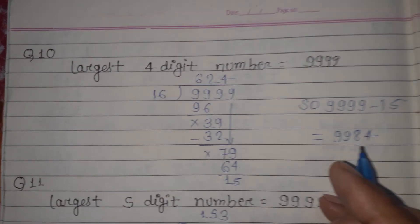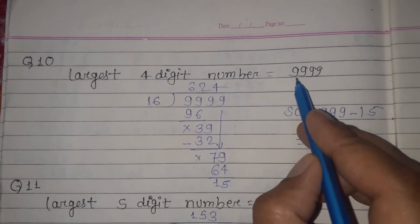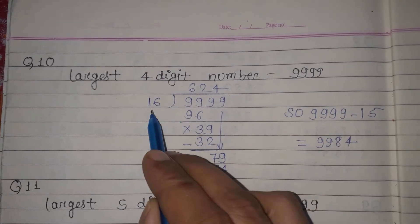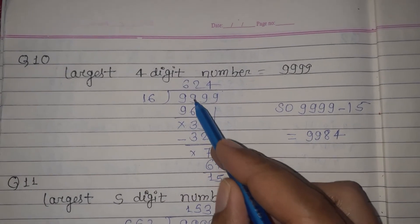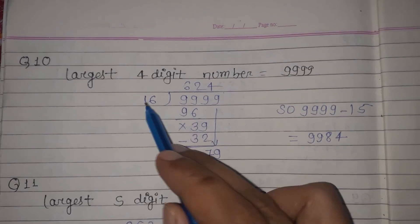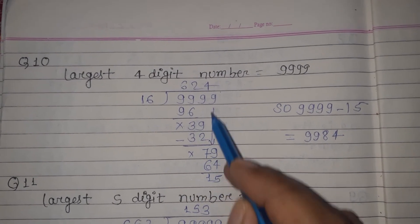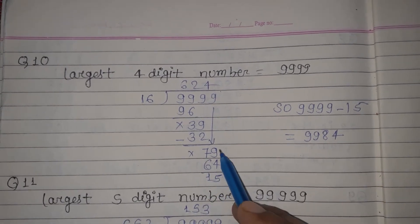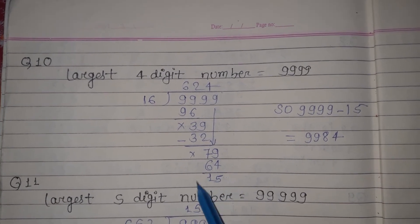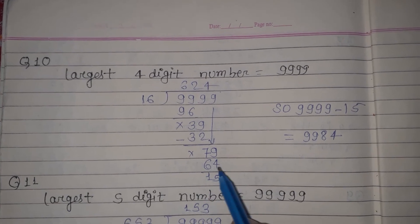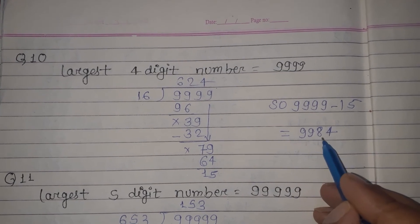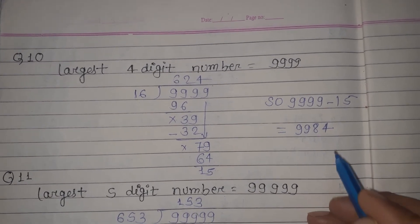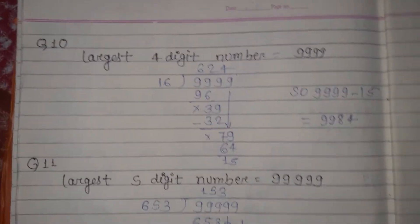Now let's see the solution for question number 10. In question number 10, we have to divide the largest 4-digit number, which is 9999, by 16. Dividing: 16 times 6 is 96, remainder 3; bring down 9, 16 times 2 is 32, remainder 7; bring down 9, 16 times 4 is 64, remainder 15. This remainder 15 is subtracted from 9999, giving 9984 as the required number that is perfectly divisible by 16 with no remainder.